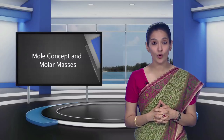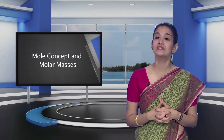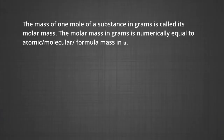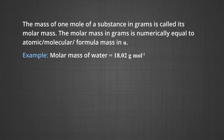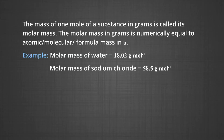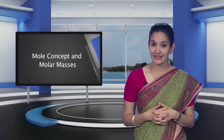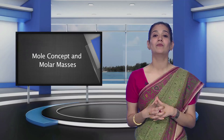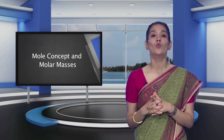Having defined the mole, it is easier to know the mass of 1 mole of the substance or its constituent units. The mass of 1 mole of a substance in grams is called its molar mass. The molar mass in grams is numerically equal to the atomic, molecular, or formula mass in u. For example, molar mass of water is 18.02 g/mol and molar mass of sodium chloride is 58.5 g/mol.